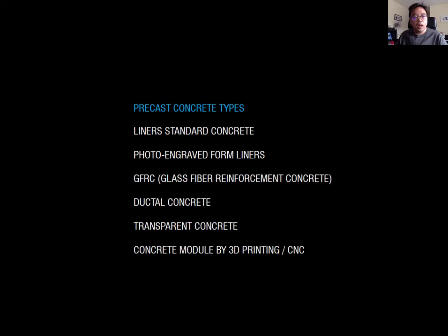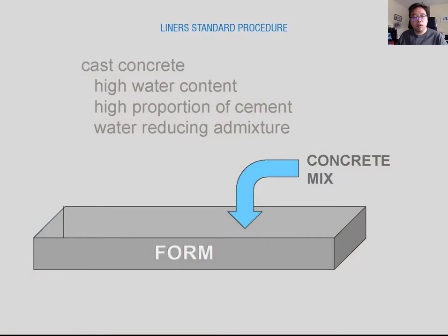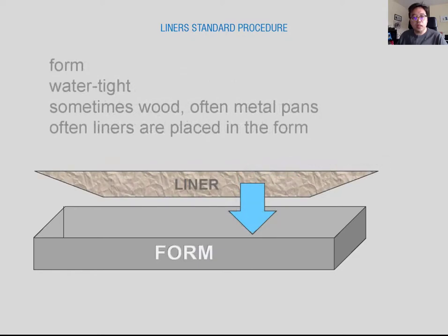Let's talk about liners and standard concrete. How can a liner pattern be created? Sometimes you can see texturized concrete over the surface, so we need to know how to fabricate this type of texture. It's a pretty simple process — first you pour the cast concrete mixture, which is the water, cement, and admixture, into a designed foam. After pouring the concrete, you simply place the proposed liners over it. The foam liner comes in many different shapes and designs.